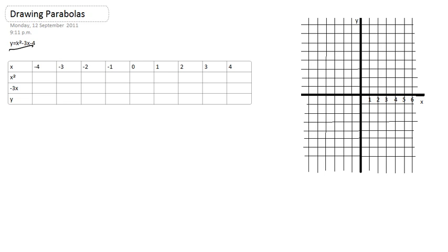If it's a positive x squared, I'm expecting it to be a U shape. If it's a negative x squared, it's probably going to be an N shape. The thing about parabolas is it doesn't matter what happens after that x squared bit, it's always going to be a U shape or an N shape.